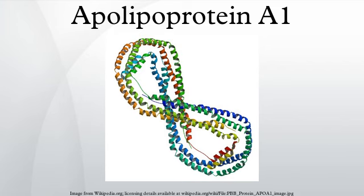5 of 9 men found to carry a mutation who were at least 35 years of age had developed premature coronary artery disease. One of 4 mutants of APOA1 is present in roughly 0.3% of the Japanese population, but is found in 6% of those with low HDL cholesterol levels.